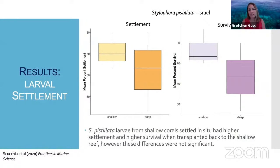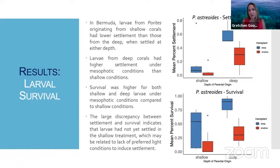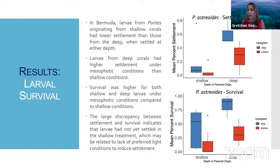Looking at settlement across different depths: in Israel we only had shallow larvae, settled at both shallow and deep zones. There was a trend towards higher settlement and survival in the shallow site, but this difference was not statistically significant. In Bermuda, where we were able to do a cross-transplantation, larvae produced by mesophotic corals tended to have higher settlement and survival than those produced by shallow corals. Interestingly, both groups tended to have higher settlement on mesophotic reefs in Bermuda compared to shallow reefs, possibly indicating a difference in light availability between mesophotic reefs in Bermuda versus Eilat.